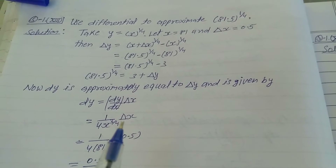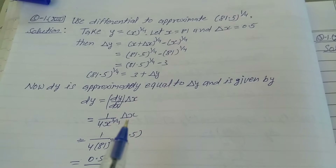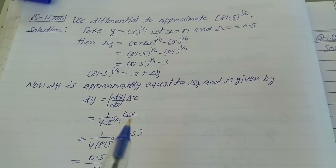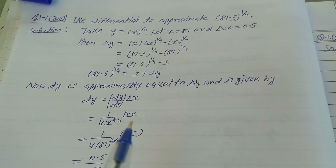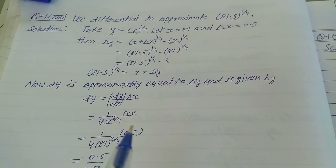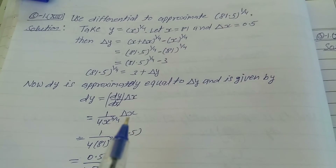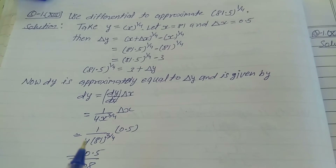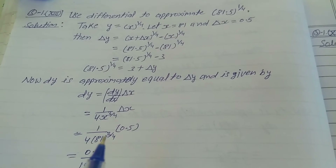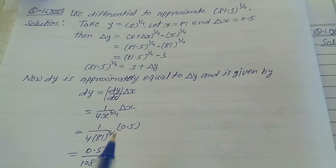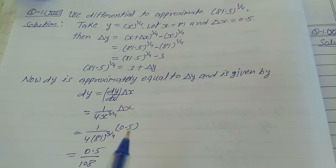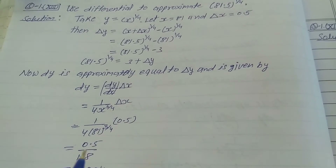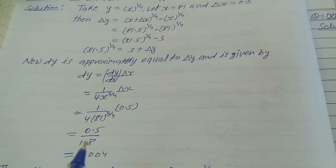Differentiating y = x^(1/4), we get dy/dx = (1/4) x^(1/4 - 1) = (1/4) x^(-3/4). So dy = (1/4) x^(-3/4) times delta x. Substituting x = 81 and delta x = 0.5: dy = (1/4) times (81)^(-3/4) times 0.5, which equals 0.5 divided by (4 times 81^(3/4)).